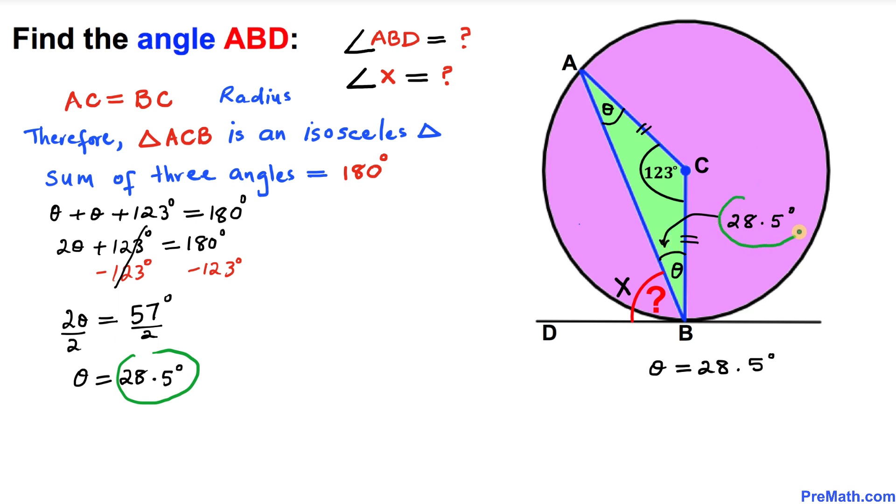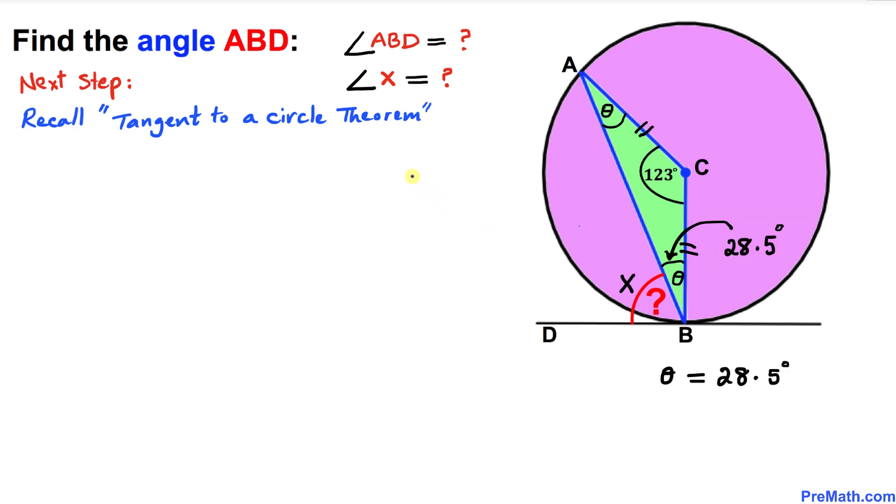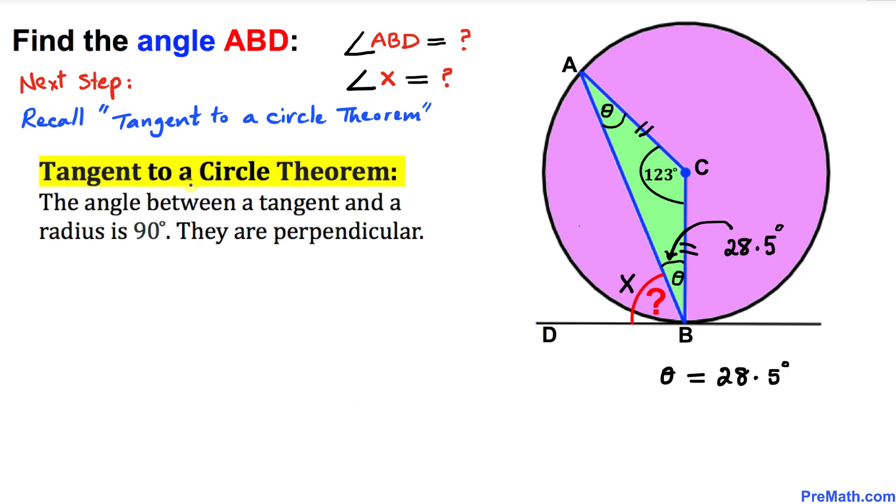Here's our next step: let's recall the tangent to a circle theorem. The angle between a tangent line and a radius is always 90 degrees; that means they are perpendicular. In this case, BD is a tangent line and BC is a radius, so therefore this angle has got to be 90 degrees.